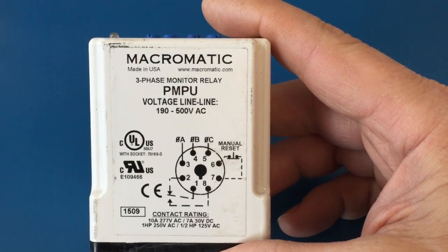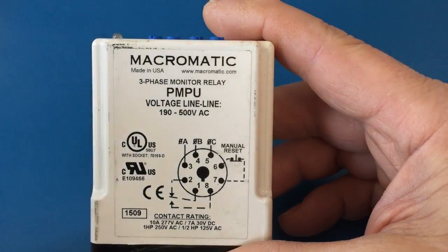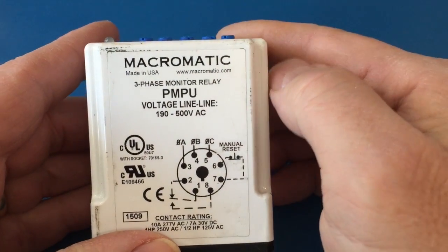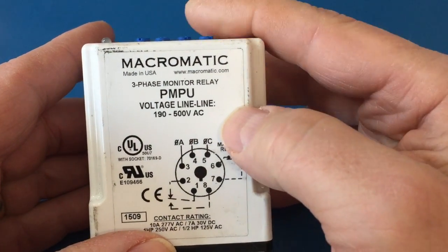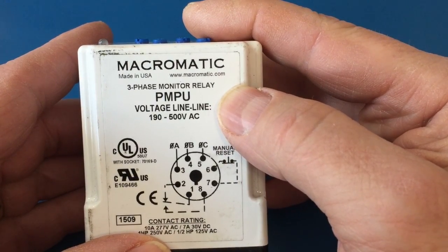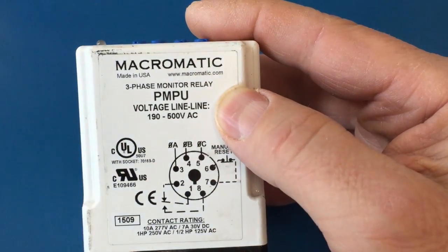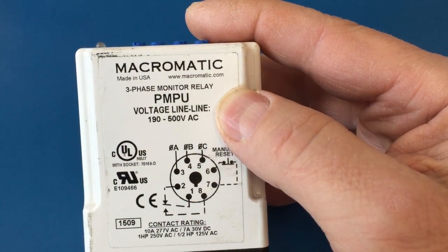First, let's look at the nomenclature on the relay. It mentions that it's a three phase monitor relay, PMPU, voltage line to line, 190-500 volts AC. So this PMPU is a designation that refers to all the features that this comes with.